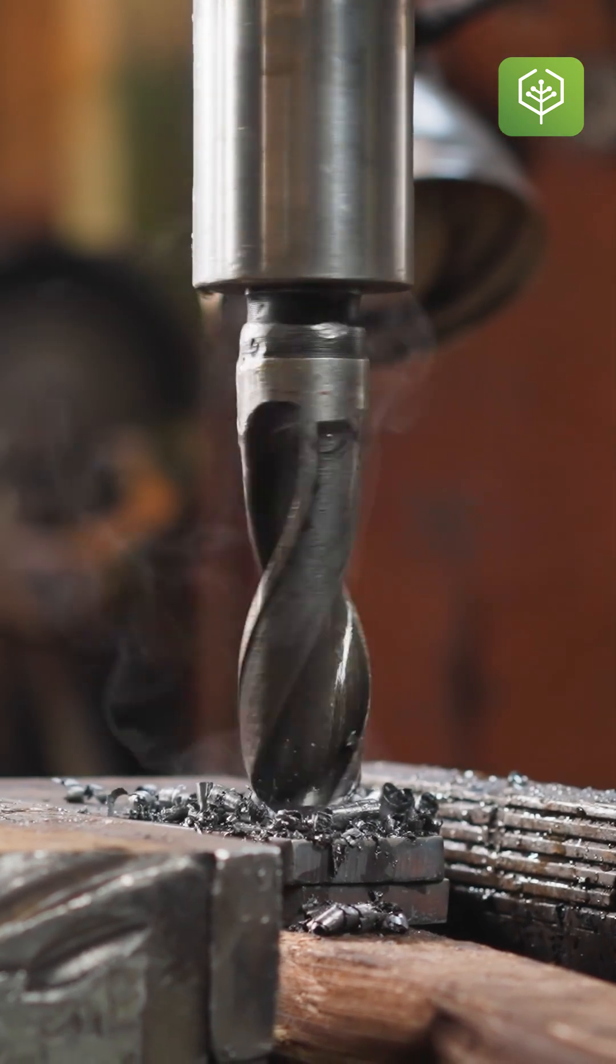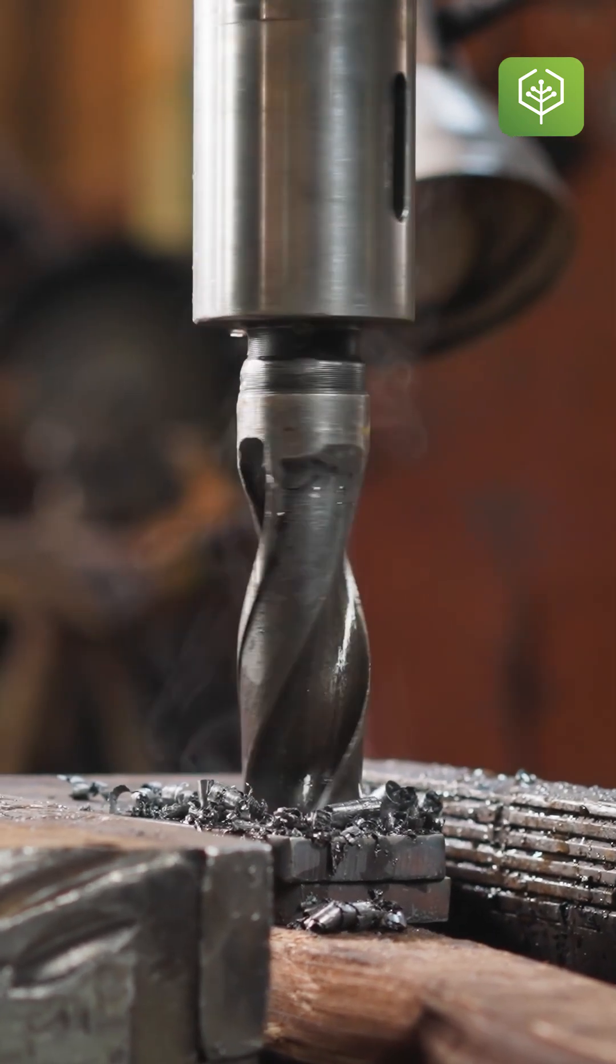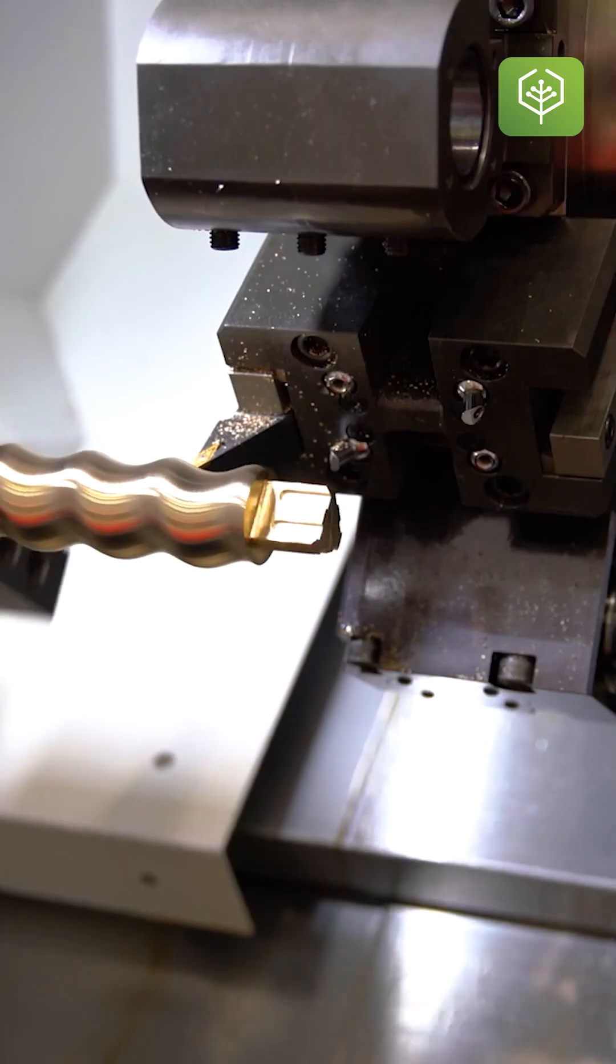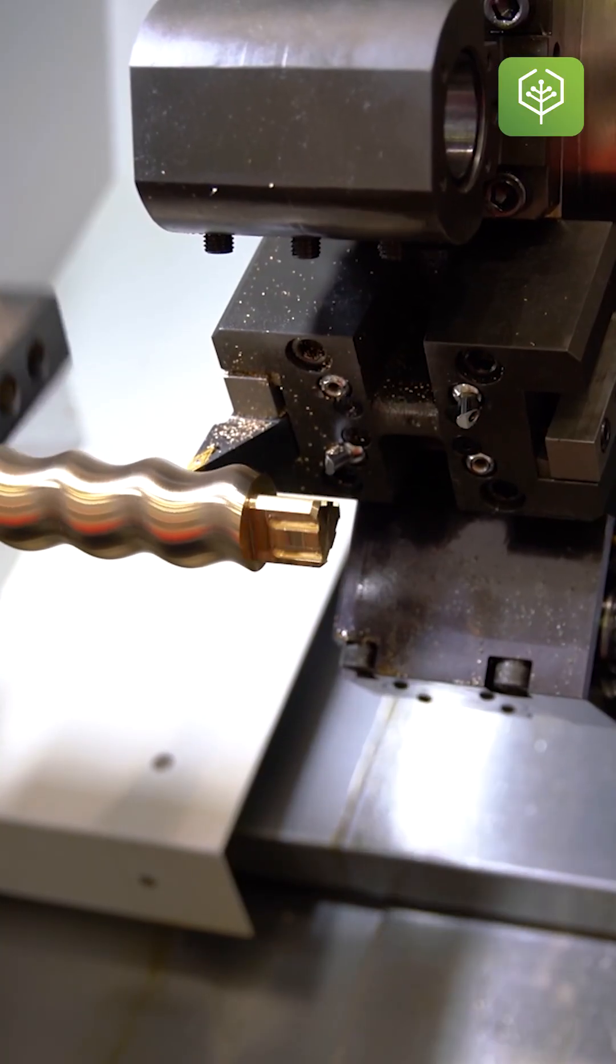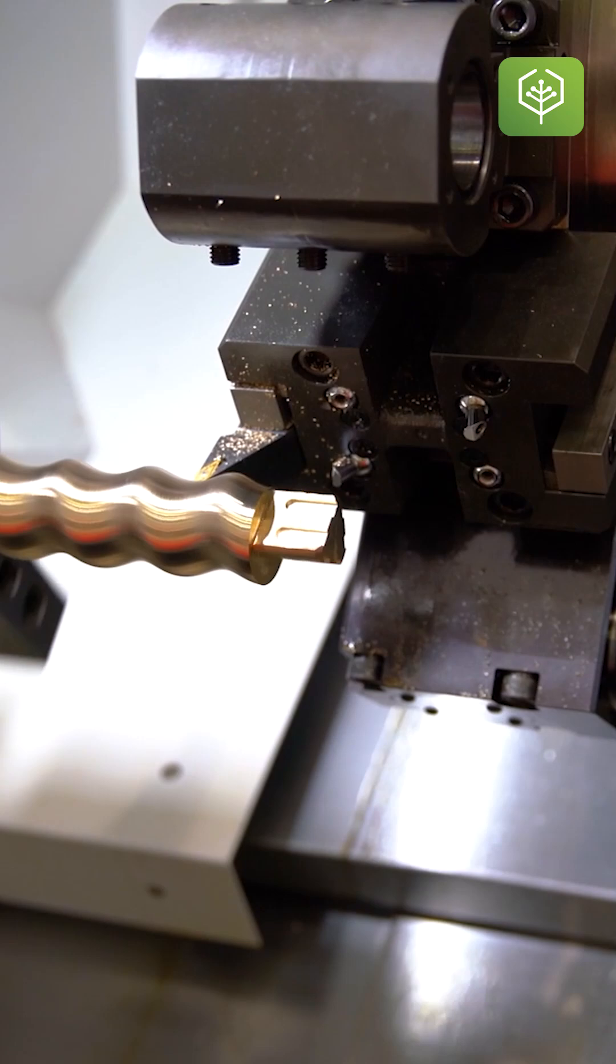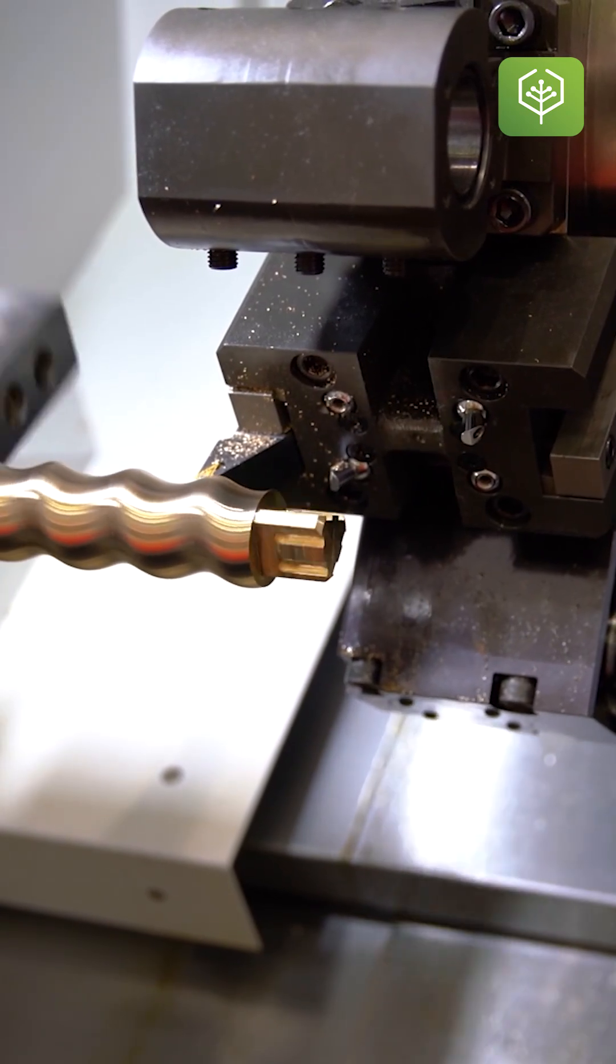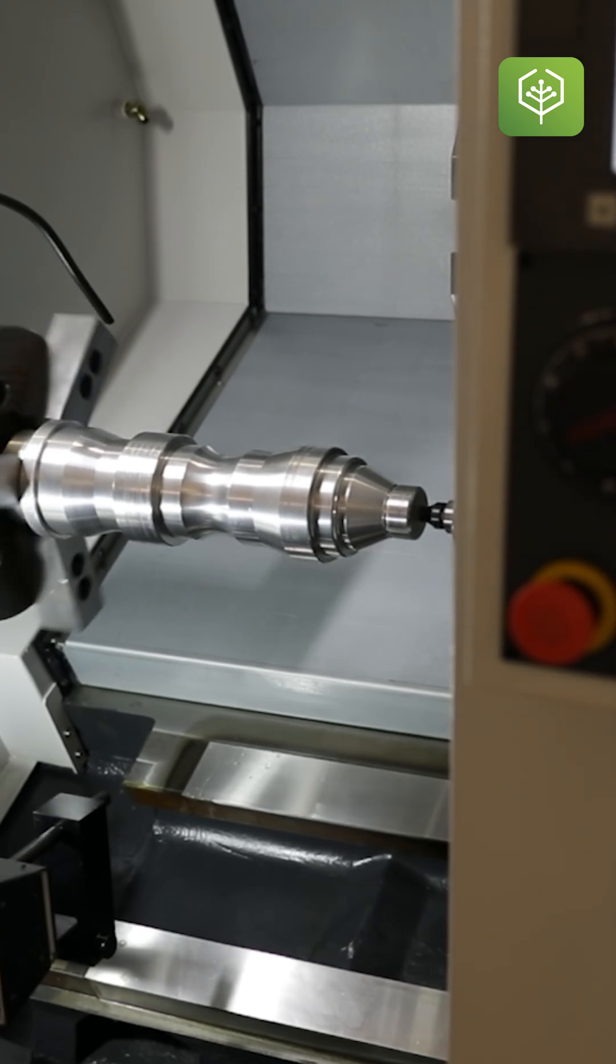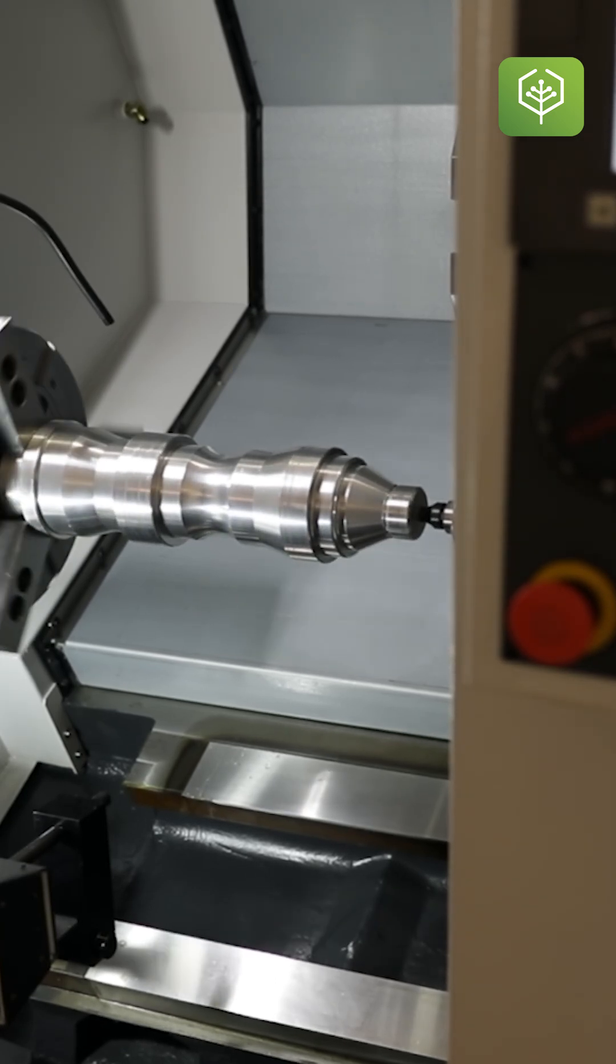Then we've got lathe CNC machines. Lathe machines rotate the part vertically or horizontally and then shape it. It can be creating a board, having a perfect radius, the perfect diameter, or the perfect shape for something to fit into something - a number of applications.